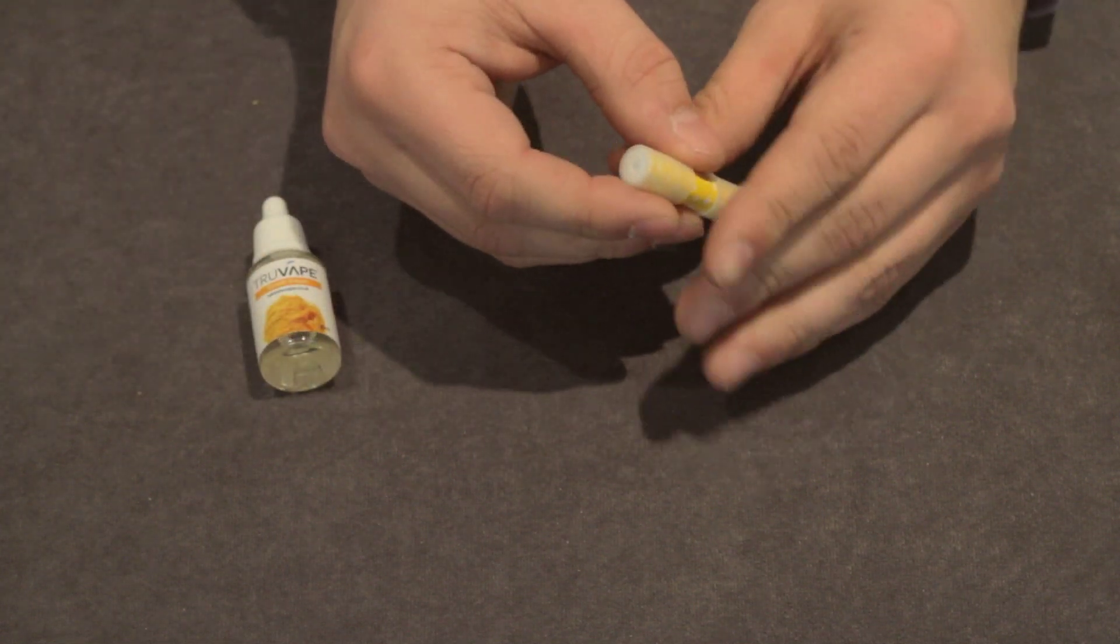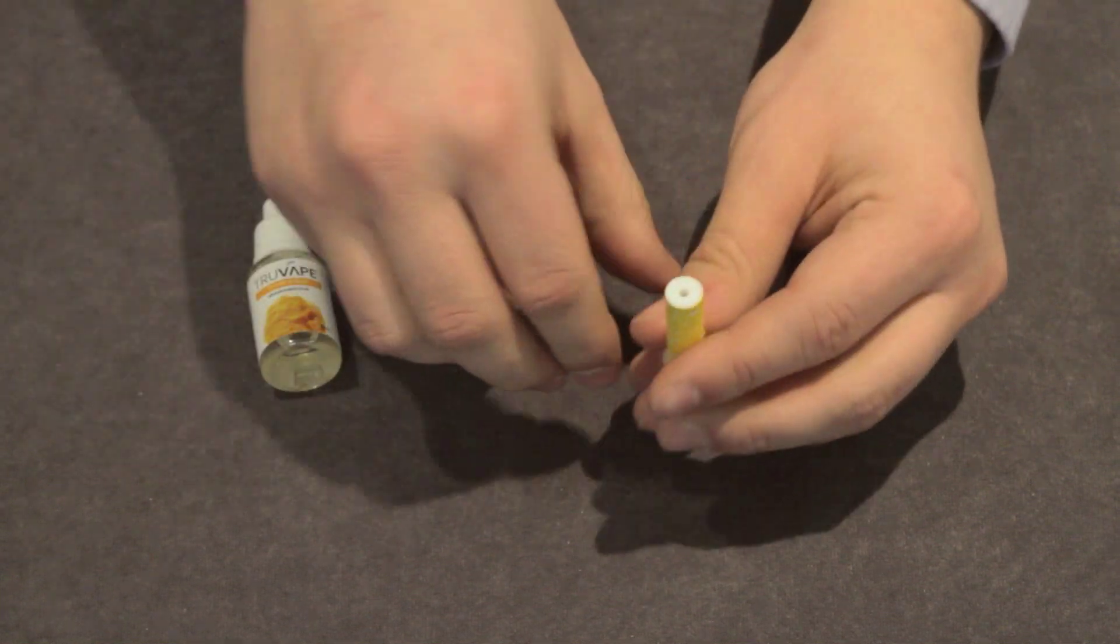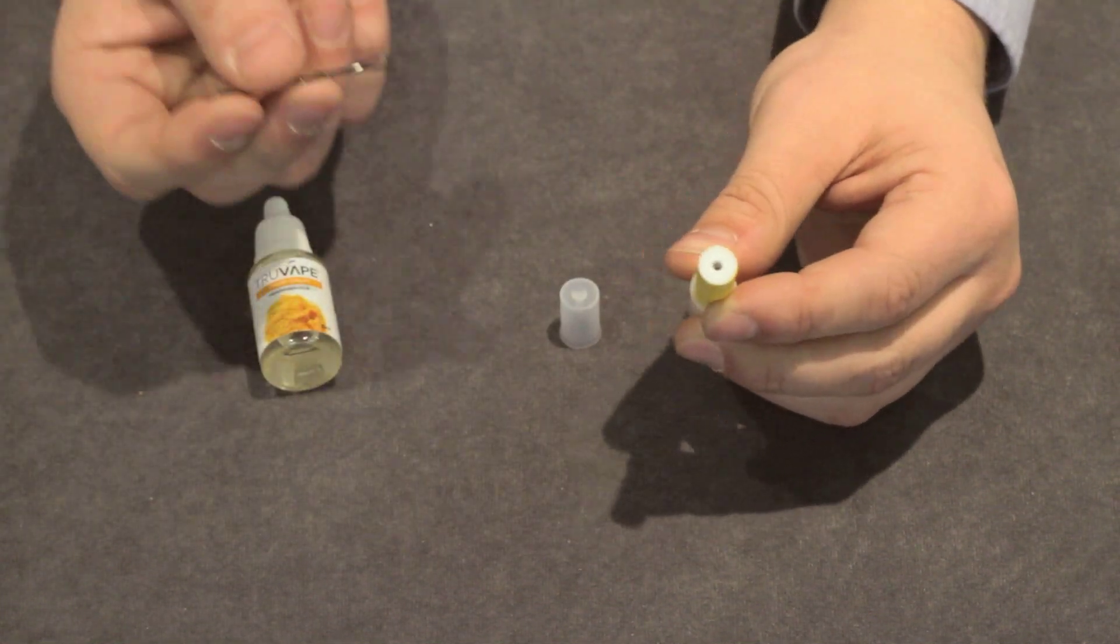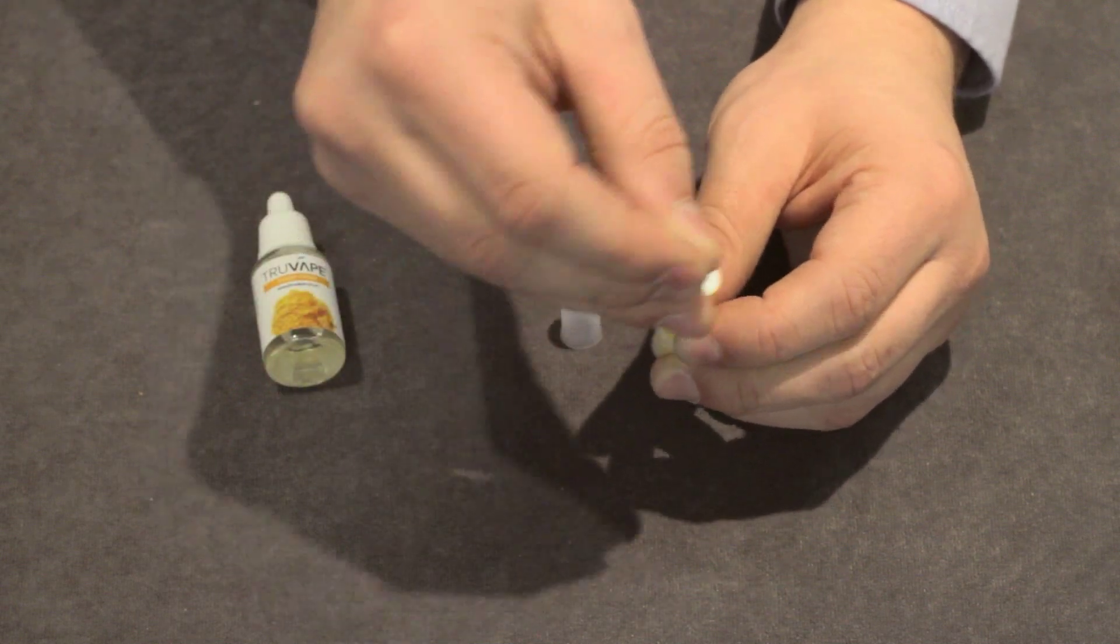Remove the cartridge from its sterile packaging. On blank cartridges, the end mouthpiece cap will not be fully pressed into place. If the cap is pressed in, use a paper clip or similar to hook the cap out.